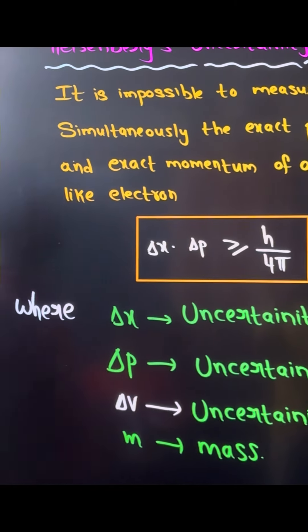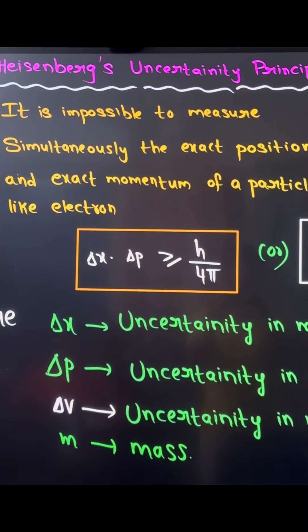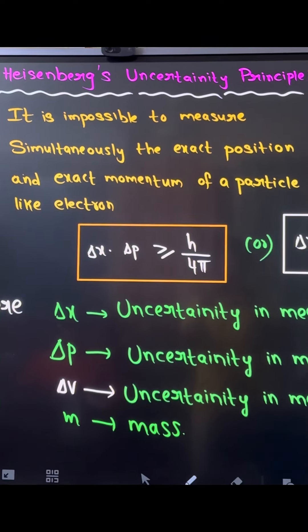Heisenberg uncertainty principle. It is impossible to measure simultaneously the exact position and exact momentum of a particle like an electron. We have a formula for this.